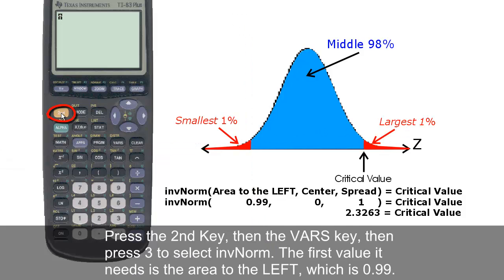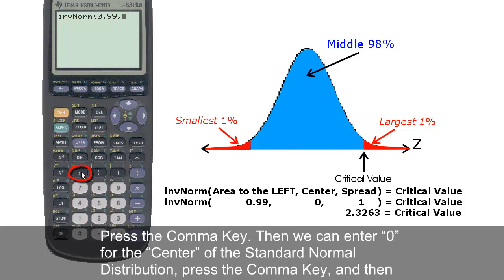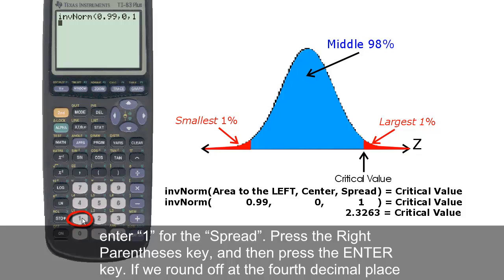Press the second key, then the VARS key, then press 3 to select inverse norm. The first value it needs is the area to the left, which is 0.99. Press the comma key, then we can enter 0 for the center of the standard normal distribution. Press the comma key, and then enter 1 for the spread.